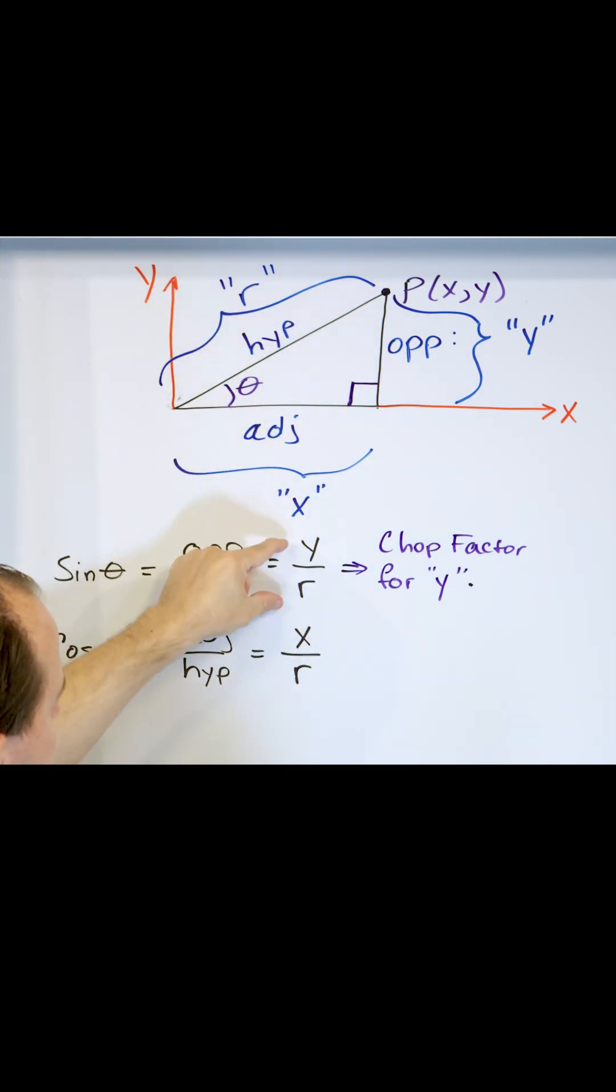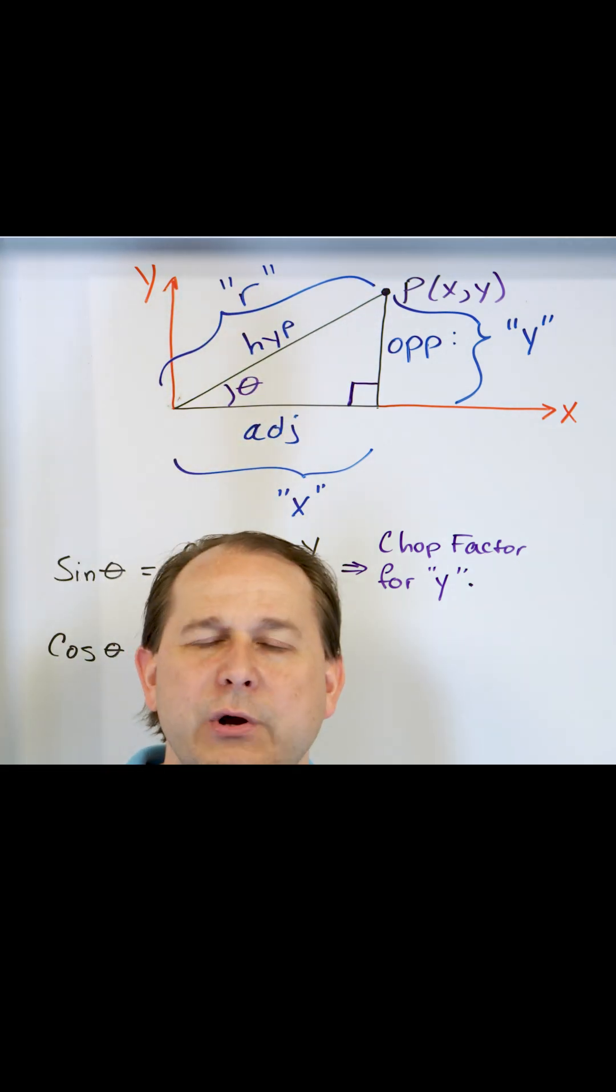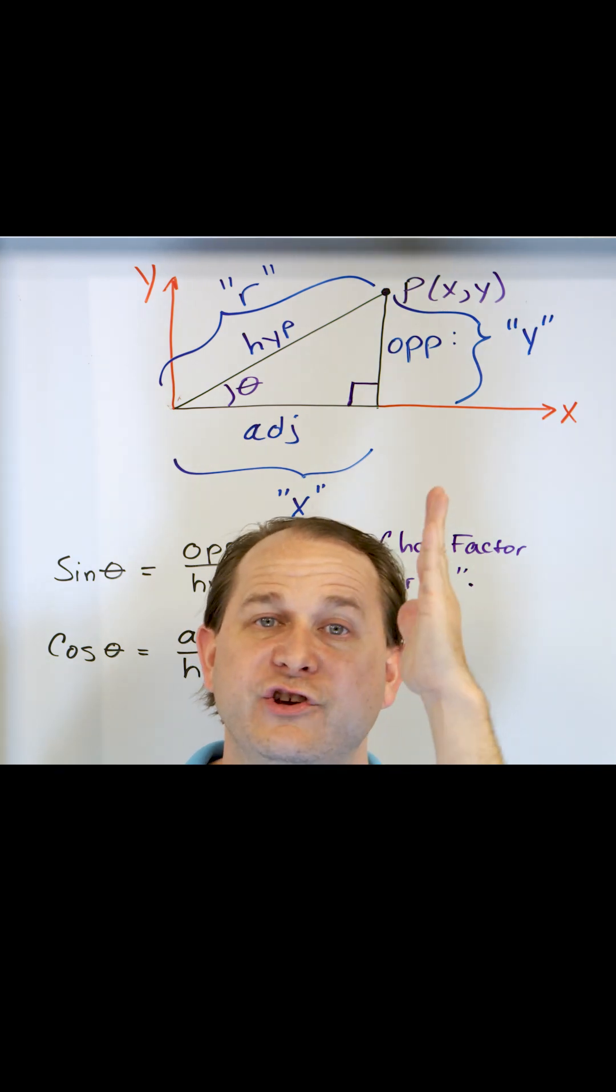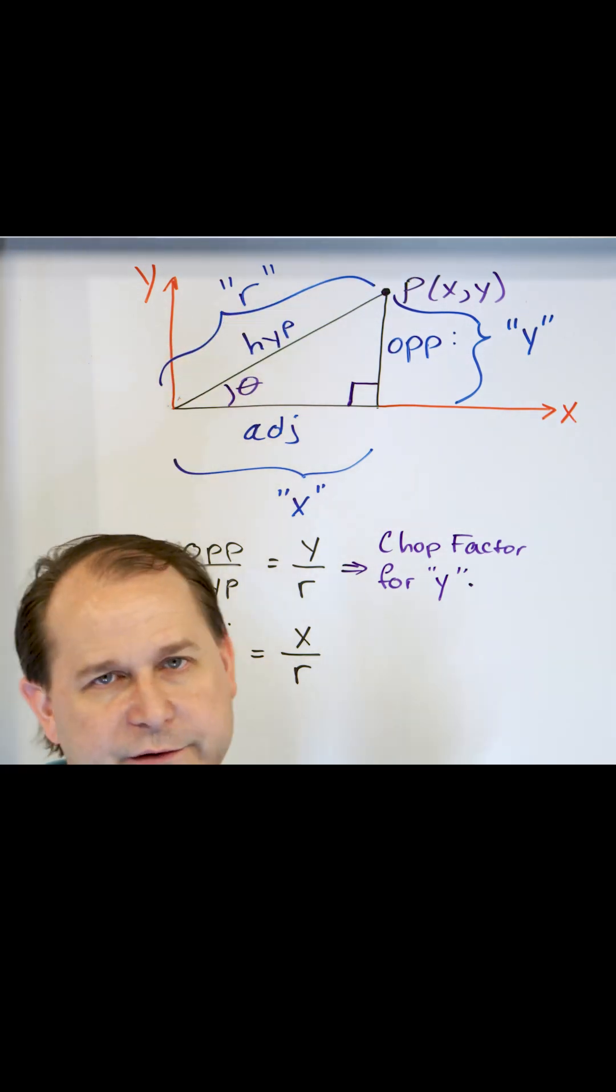When you take y and divide by r, you get a number less than one. And it tells you in a number form how much of this triangle is going up in the y direction compared to the total length of the triangle, which is the hypotenuse.